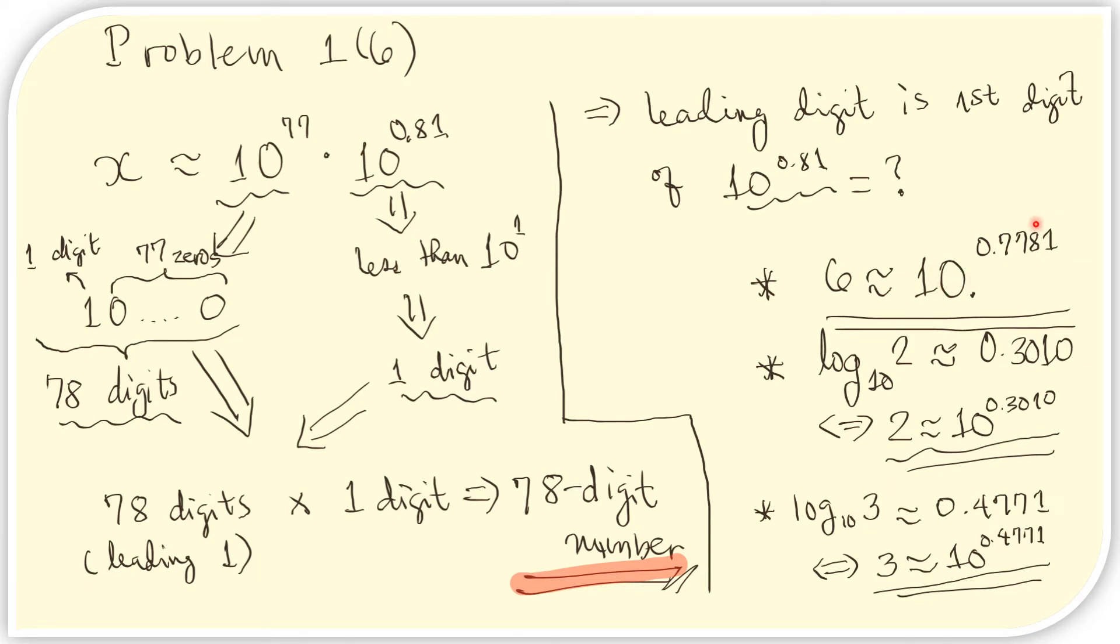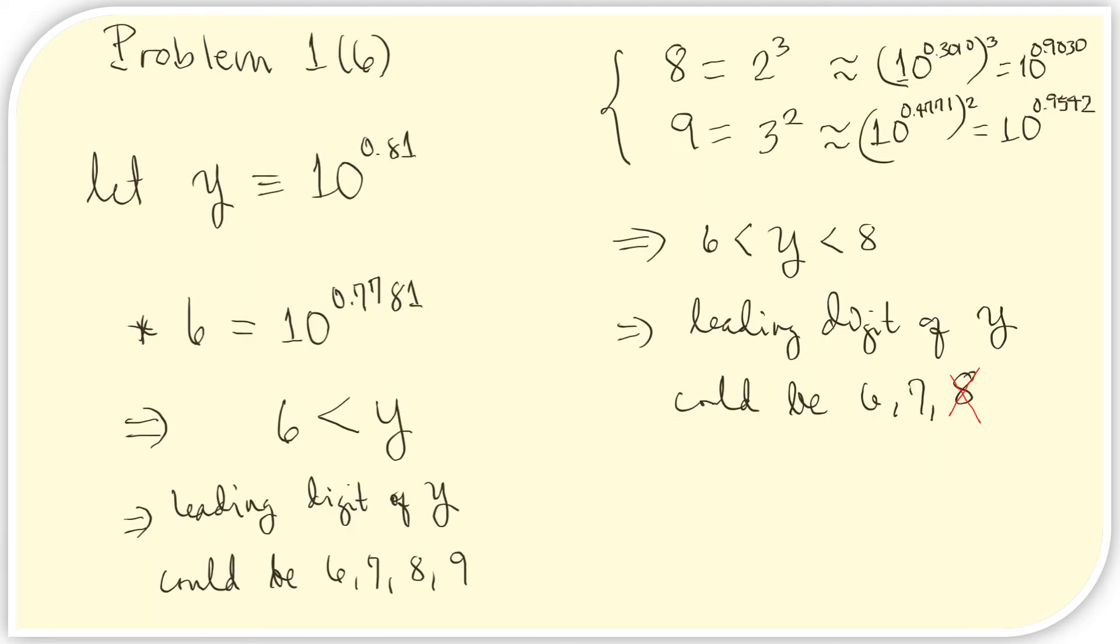We can express them using these approximations using the base of 10. These again were from the given. Now, let us define y to be the number that we are interested in. Here, we notice that the exponent here is less than the exponent here. So we conclude that 6 must be less than y. And therefore, the only possible leading digits for y could only be either 6, 7, 8, or 9.